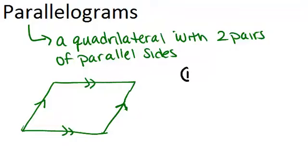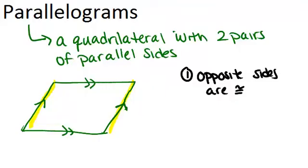One property is that opposite sides will always be congruent. So that means that not only are these opposite sides here parallel, they're also the same length. So we can notate that with little tick marks.